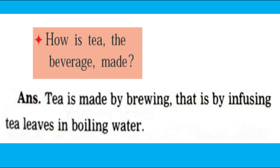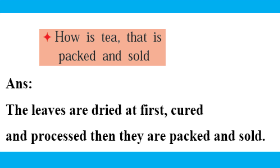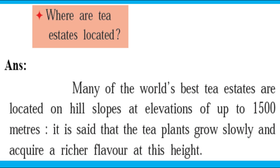Now let's look at the margin questions. Question one: How is tea, the beverage, made? Answer: Tea is made by infusing tea leaves in boiling water. Question two: How is tea packed and sold? Answer: The leaves are first dried, cured, and processed, then they are packed and sold.